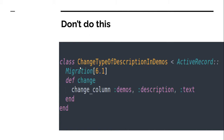When you generate a migration, in the change method you can write `change_column :demos, :description, :text`. But at the heading you can see I have written 'don't do this' — because we need to be careful. The reason is that `change_column` is not reversible in nature, so you need to make the migration reversible manually.